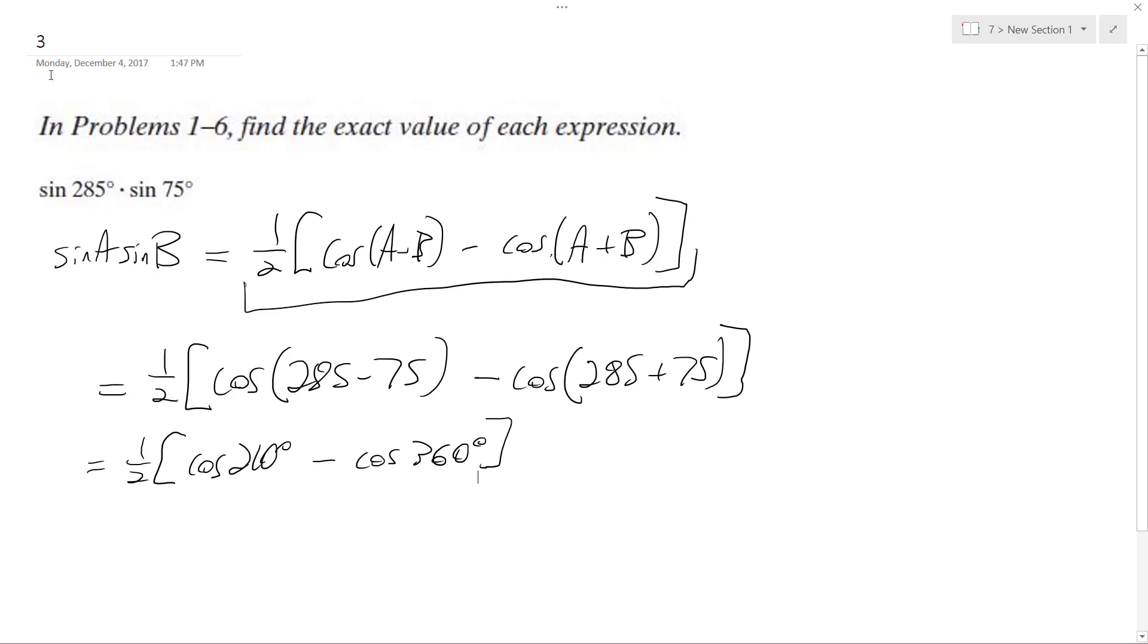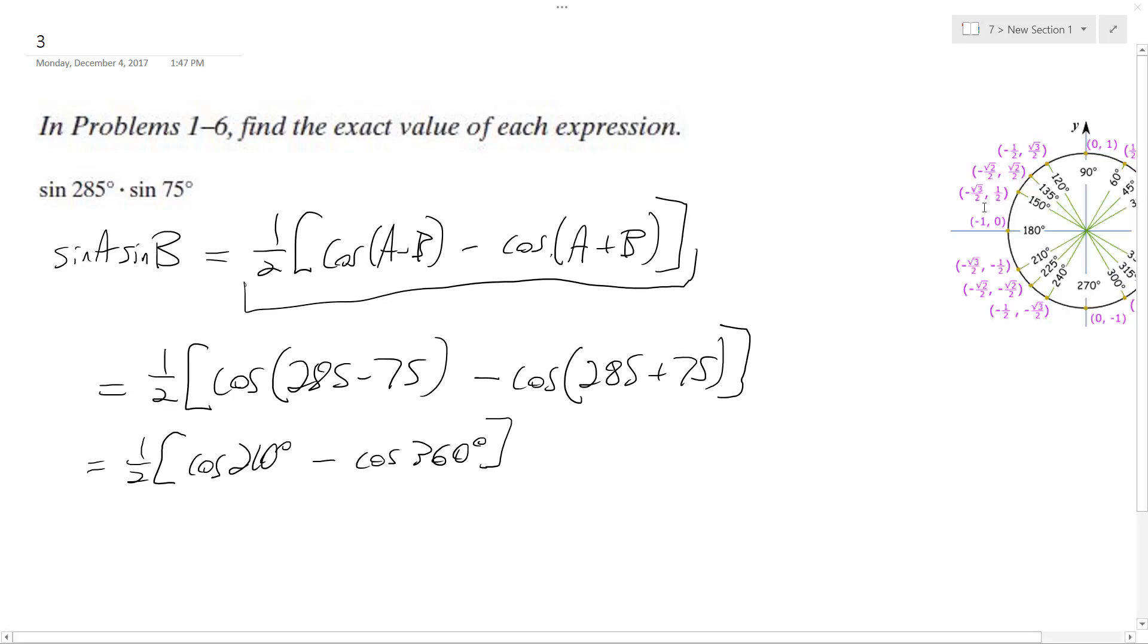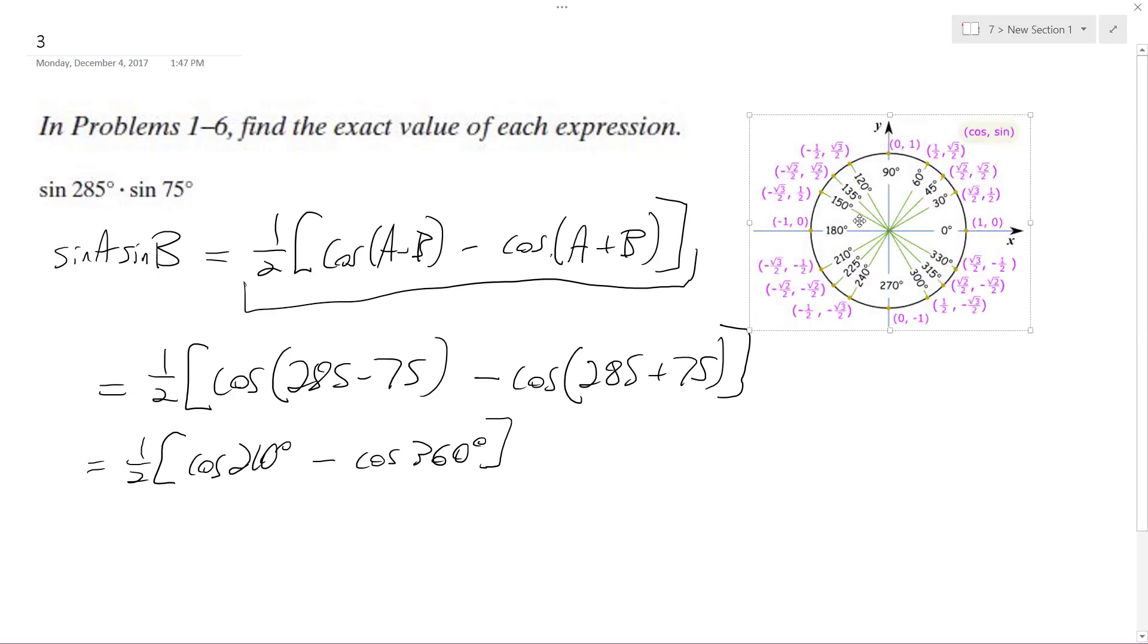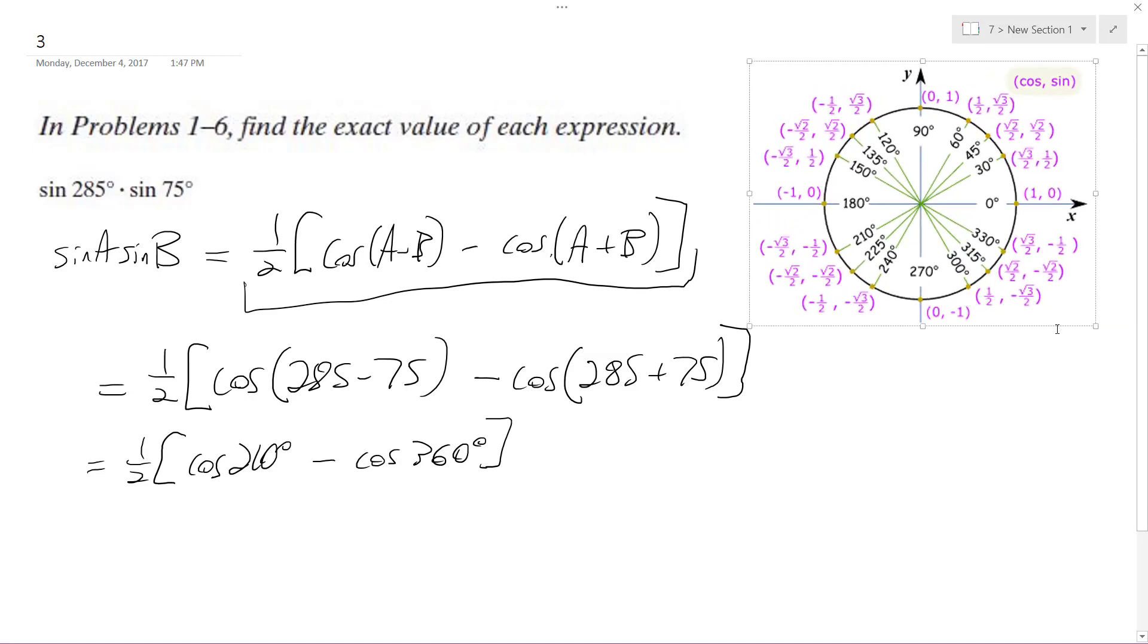Let me pull out my unit circle. Cosine of 210 degrees is right here, equal to negative root 3 over 2. Cosine of 360 degrees is just one full circle, so it's basically the same as cosine of 0 degrees, which is just 1.